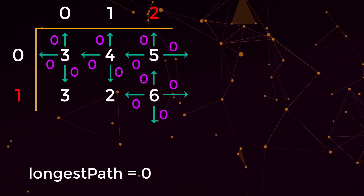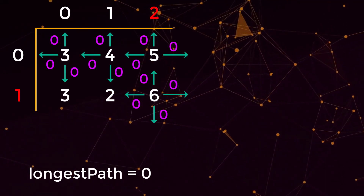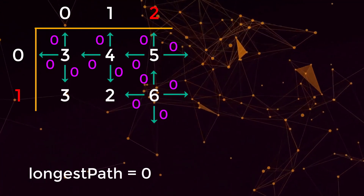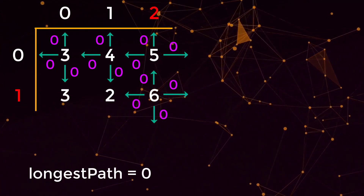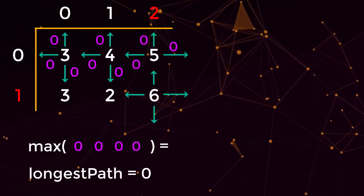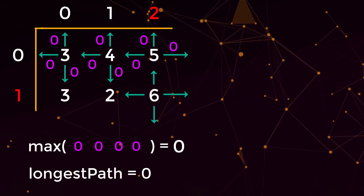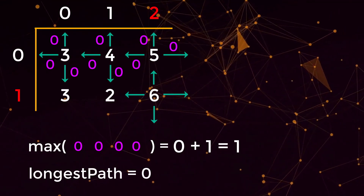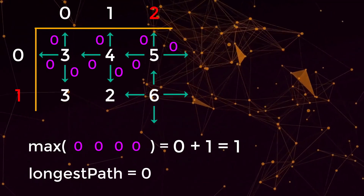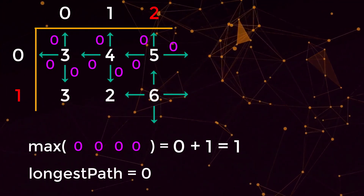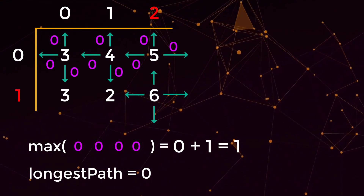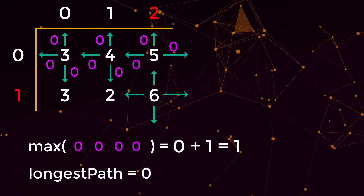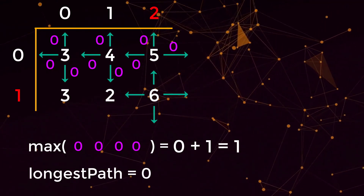At position (1,2) we've completely exhausted all directions. We get the maximum across all directions — left, up, right, and down — which is zero. Then we add one to account for the current position itself, because six alone is a path of size one. We always want the maximum, not the minimum, across all directions to find the longest path.